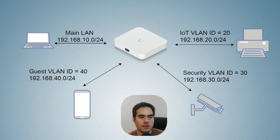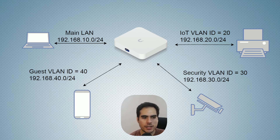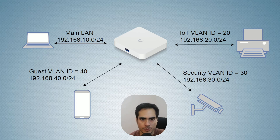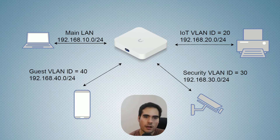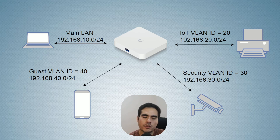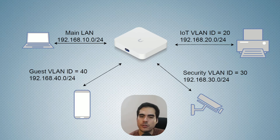Now let's talk about VLANs. What if I told you that you can have multiple networks instead of just one, and manage them all on the same router? That's what VLANs are — logical networks that you can create in your router, allowing you to do network segmentation. You can separate your networks. VLAN stands for Virtual Local Area Network.